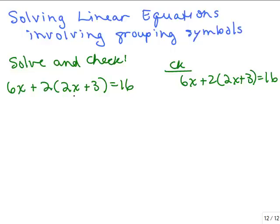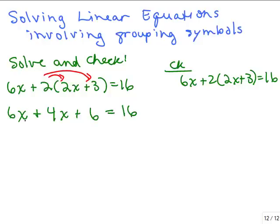The left side of the equation is not simplified because I have parentheses, so I need to do the distributive property here first. So we've got 6x. Now we have to distribute that 2: 2 times 2x is 4x, and 2 times 3 is 6. I still have to simplify the left-hand side by adding like terms. I now have 6x plus 4x, so that's 10x plus 6 equals 16.